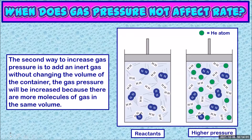There is a way to increase the pressure of a gas without changing the size of its container, and that is by adding an inert gas. With the extra gas molecules in the container, there's going to be more wall collisions, so the pressure will be higher. We see in the second container, adding some helium atoms is going to mean that container is more crowded. The particles are going to collide with the walls more often, so that is going to increase the pressure.